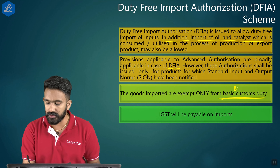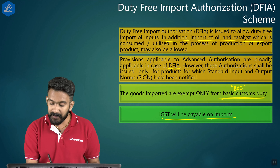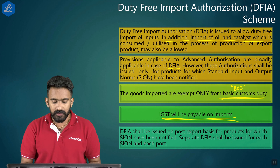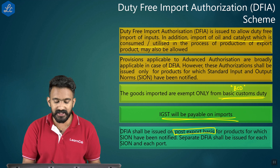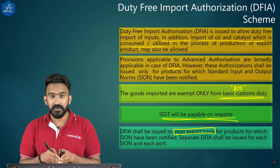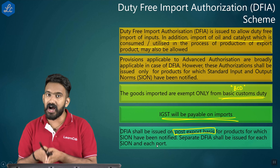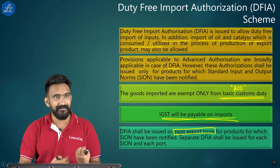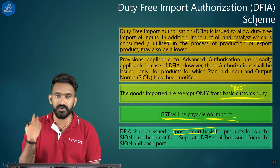Under DFIA, only Basic Customs Duty enjoys the exemption; IGST is payable on imports. DFIA shall be issued on a post-export basis for products for which SION have been notified. This means the applicant will have to apply for DFIA after completing an export — essentially, having already exported, you can then get an authorization for further import of inputs.